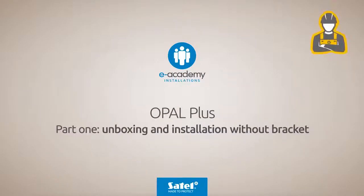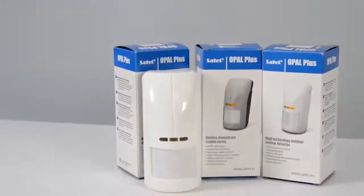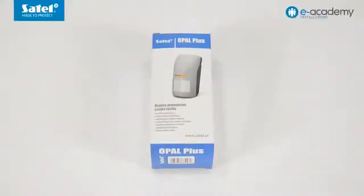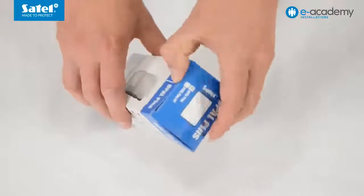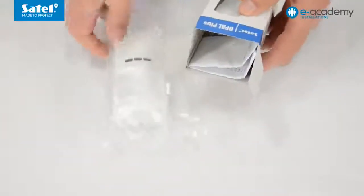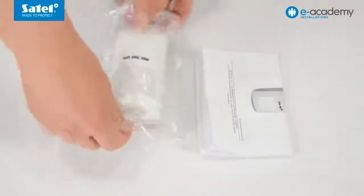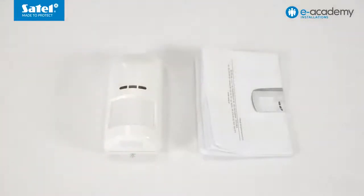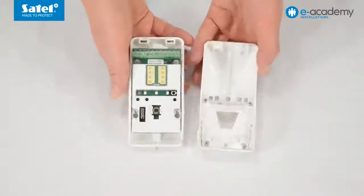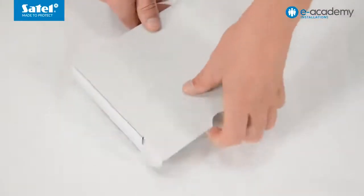Opal Plus Detector Part One: Unboxing and Installation Without Bracket. The Opal Plus package contains the detector, operating manual, and a warranty. On opening the detector enclosure, the electronics can be seen inside.